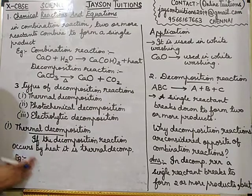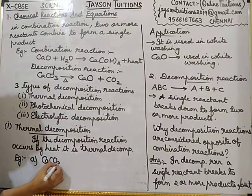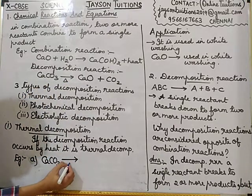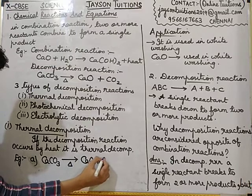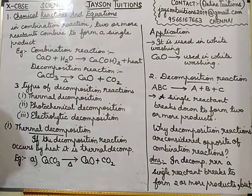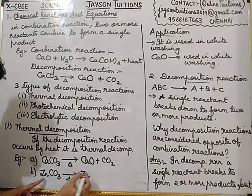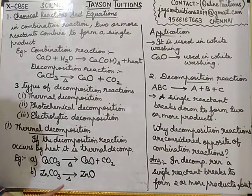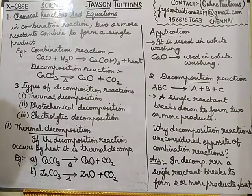Examples for thermal decomposition: First, calcium carbonate — CaCO3 — on heating gives calcium oxide plus carbon dioxide. Second, zinc carbonate — ZnCO3 — on heating gives zinc oxide plus carbon dioxide. In both cases, a single reactant is breaking down with the help of heat, forming two products.